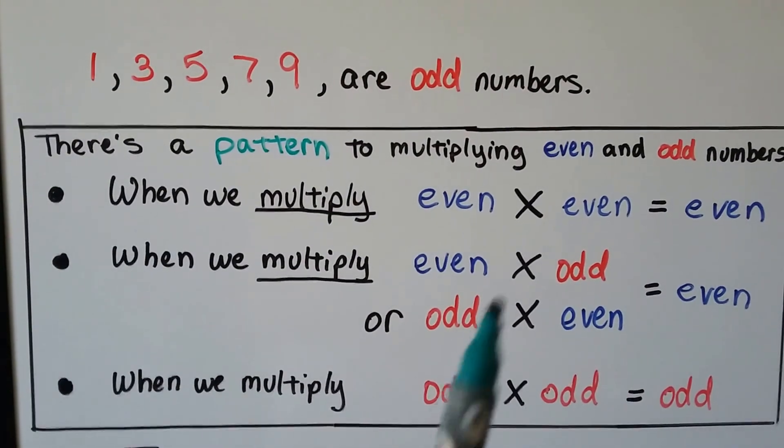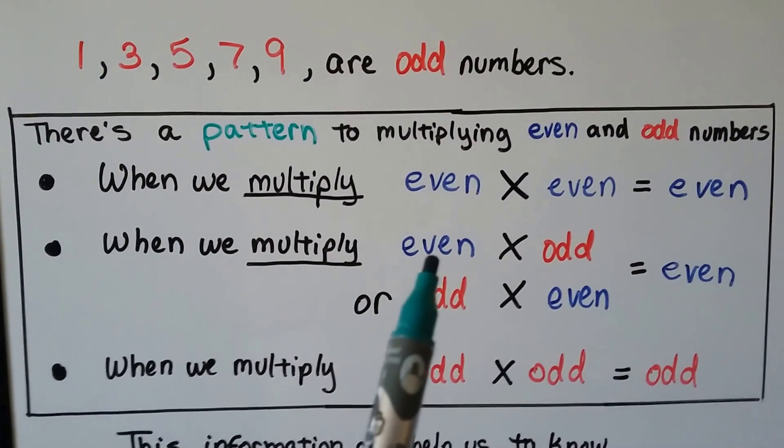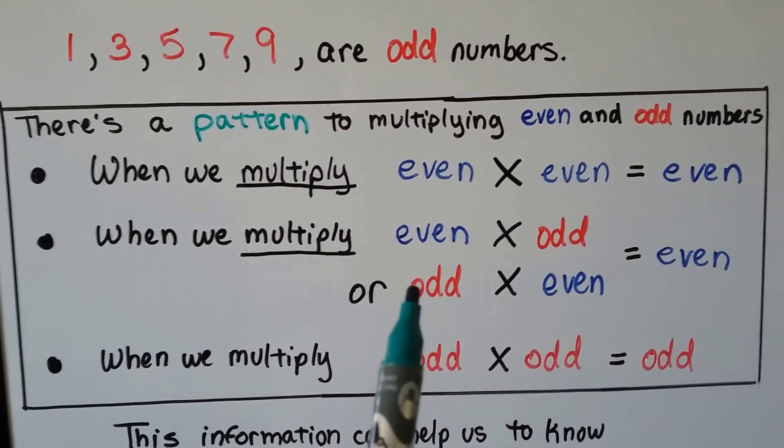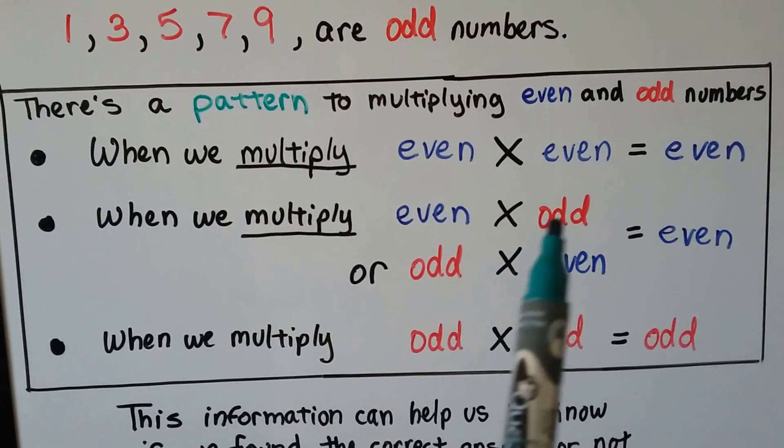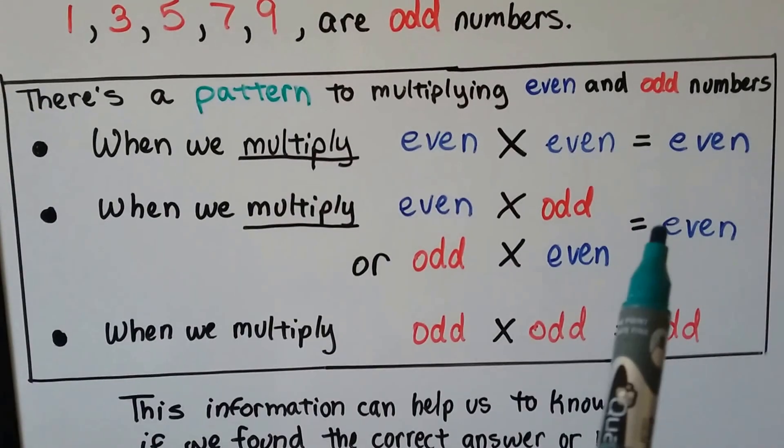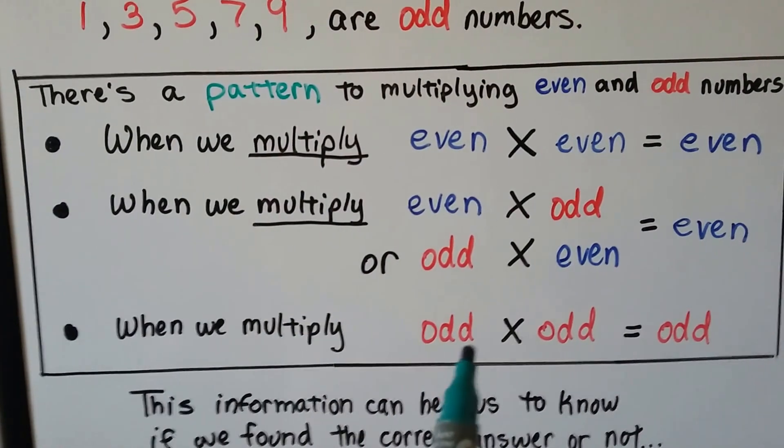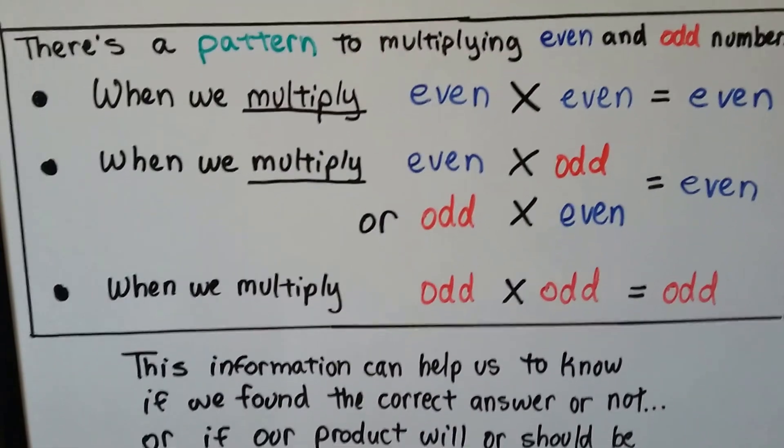When we multiply an even number times an even number, we get an even number. And when we multiply an even times an odd, and the commutative property says it doesn't matter which direction you multiply and you get the same answer, right? Two times five or five times two, it's going to be an even number. But when we multiply an odd to an odd, then that's when we get an odd answer, an odd product.